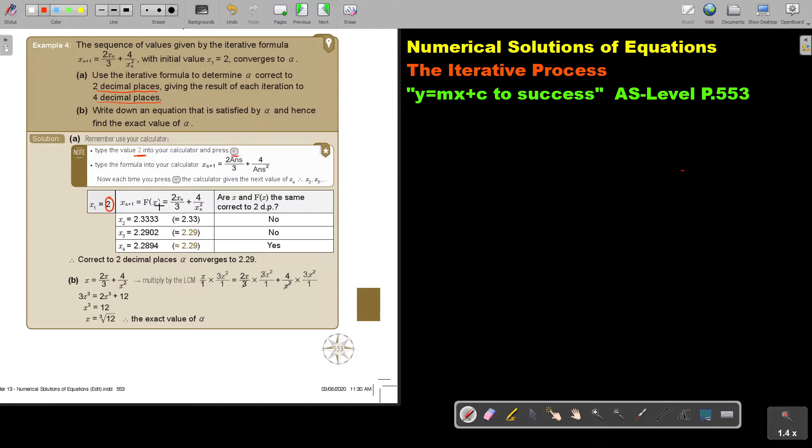So I press 2 equals, that's my first step. Then I'm going to start, and I'm going to say 2 times answer divide 3, plus 4 divide, and remember now it's x squared, so it's answer squared. Press the x2, and then I think equals, and I'm getting it's correct, so it's 2.3333. Remember what they said? 4, don't make more, they want 4.